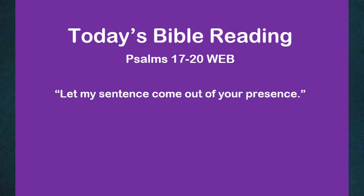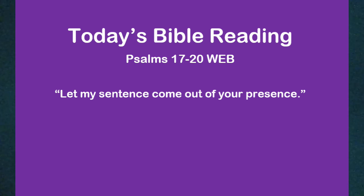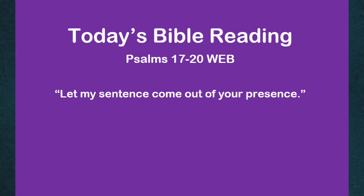Verse eight: keep me as the apple of your eye. Hide me under the shadow of your wings from the wicked who oppress me, my deadly enemies who surround me. They close up their callous hearts with their mouth. They speak proudly. They have now surrounded us in our steps. They set their eyes to cast us down to the earth. He is like a lion that is greedy of his prey, as it were a young lion lurking in secret places.